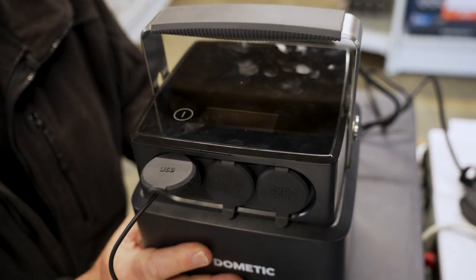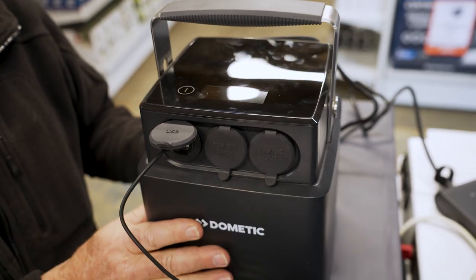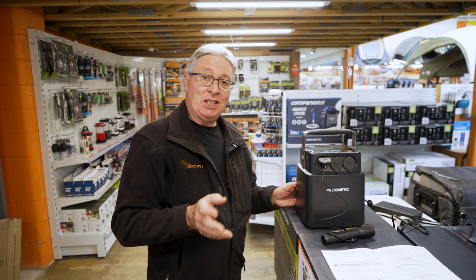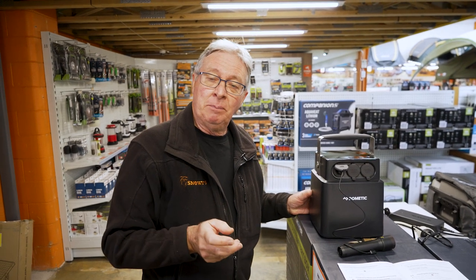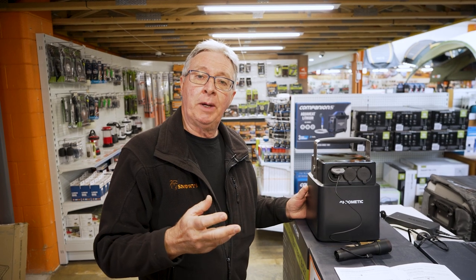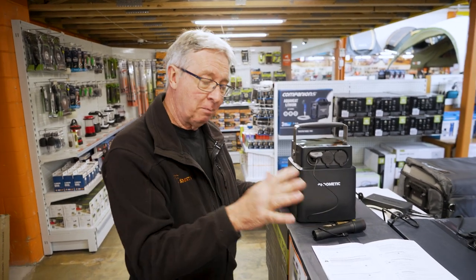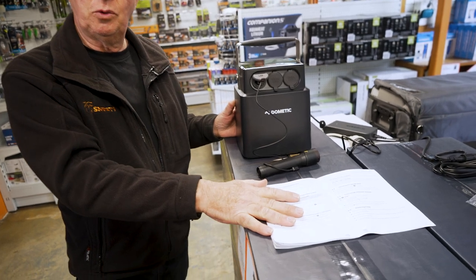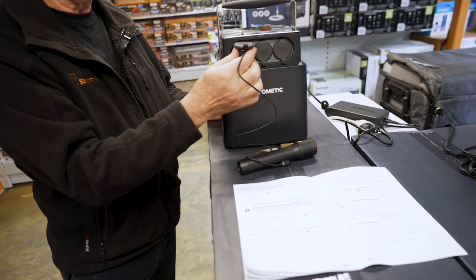This unit will turn itself off after 24 hours if it's not being used and not attached to any charger. You can charge this unit using a smart alternator, either a 12 volt socket in your car or a solar panel. If you're going to use the solar panel, you can use it with or without a solar regulator, but check the manual. Make sure you're not going to use the wrong voltage.